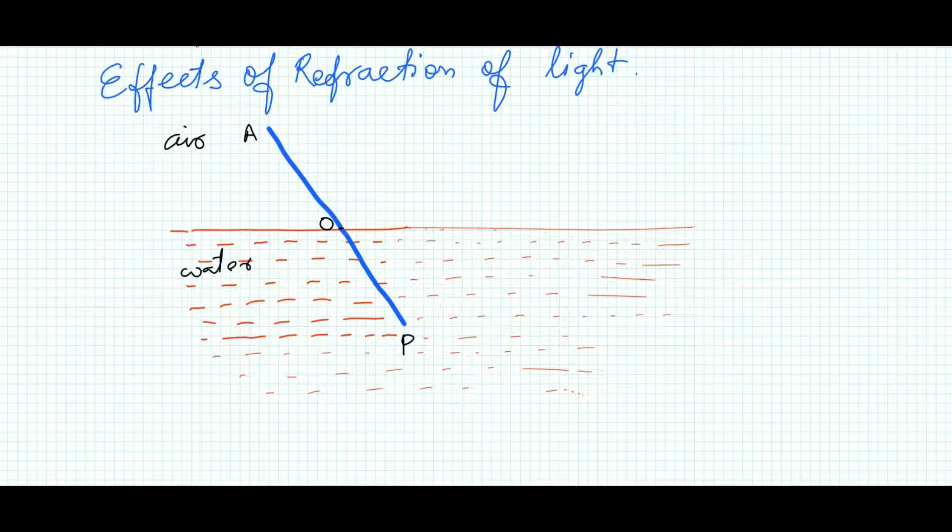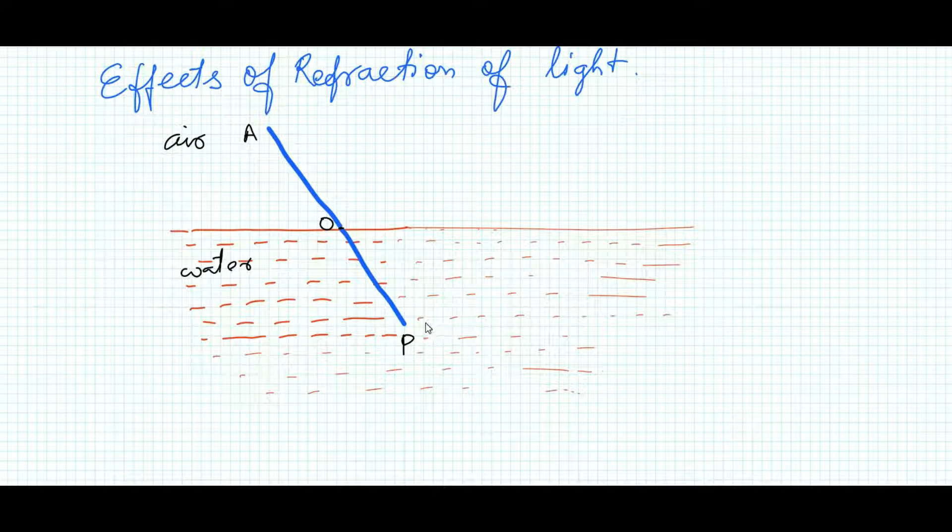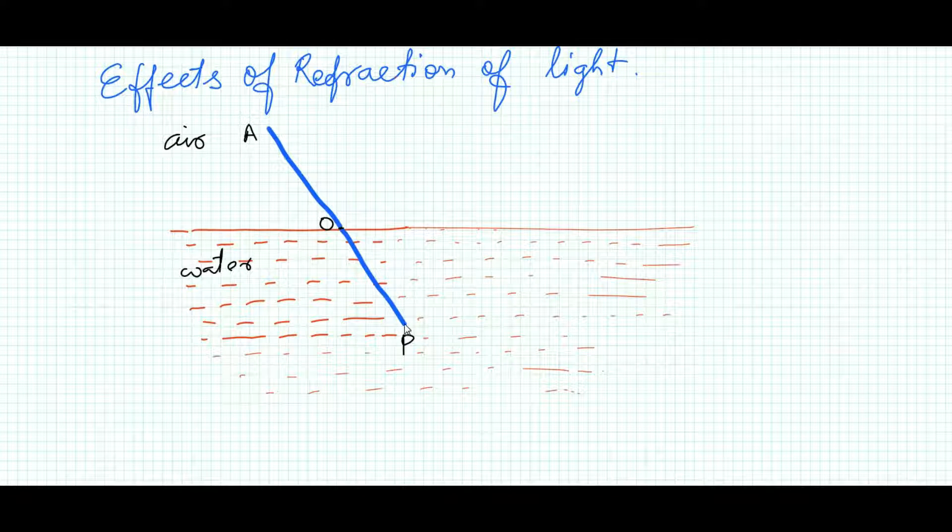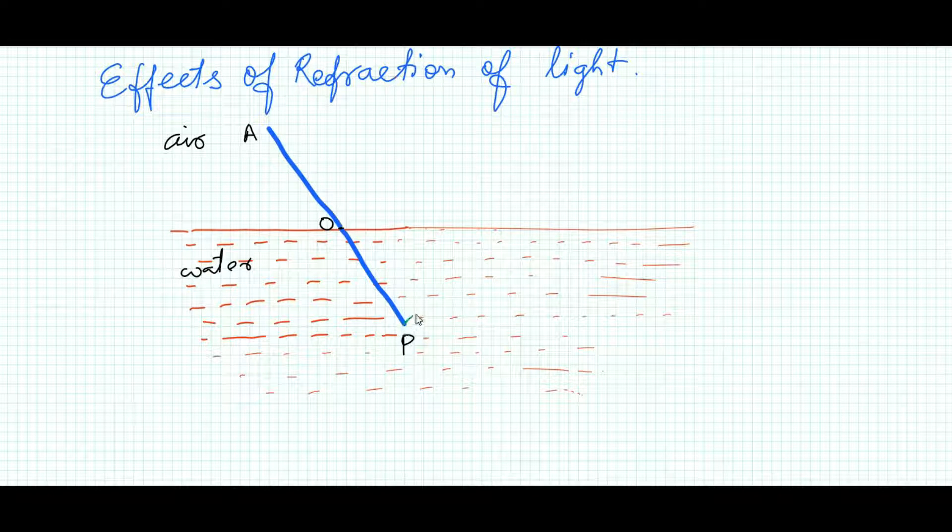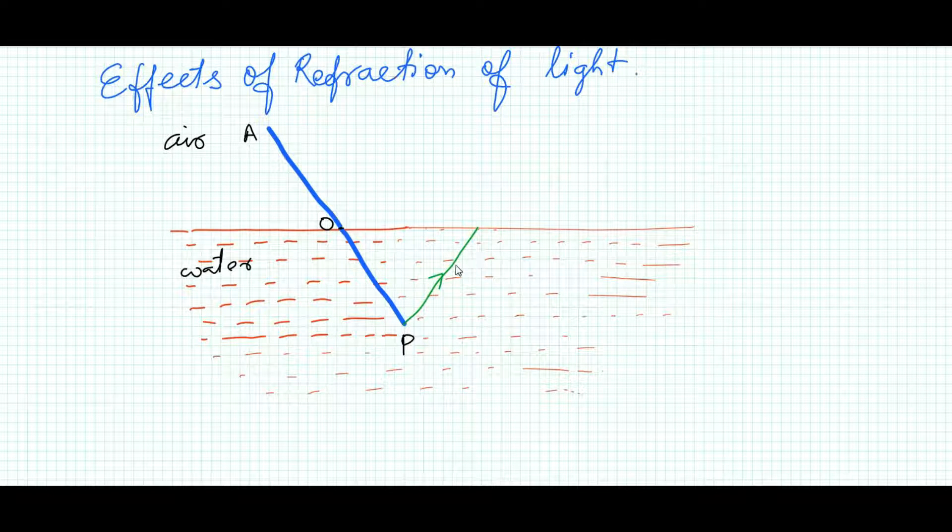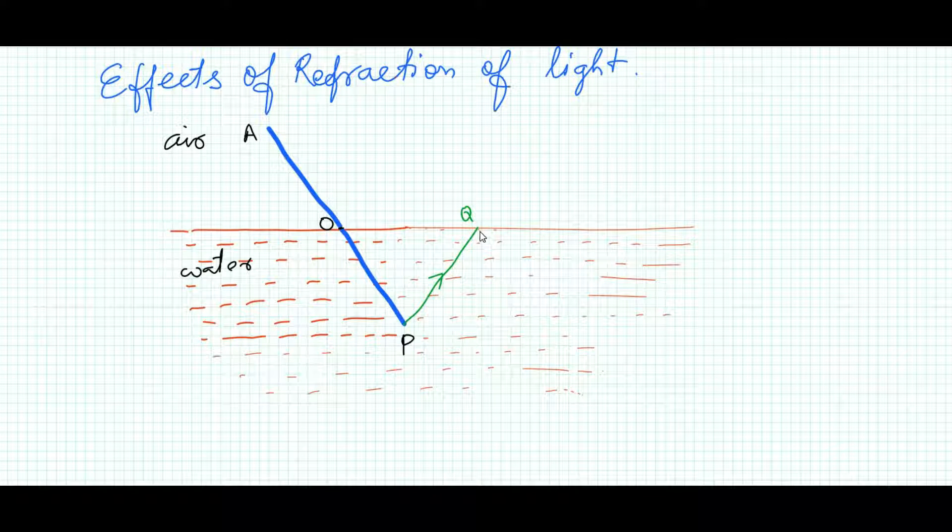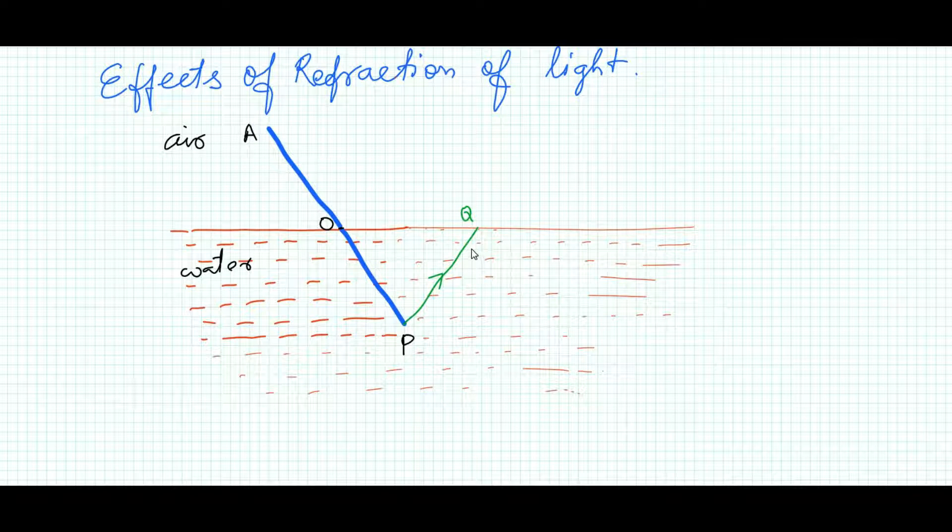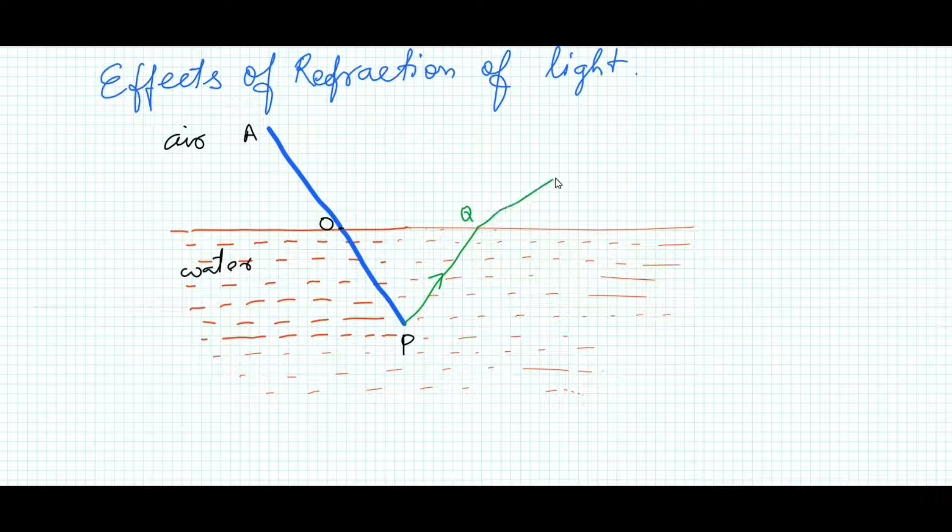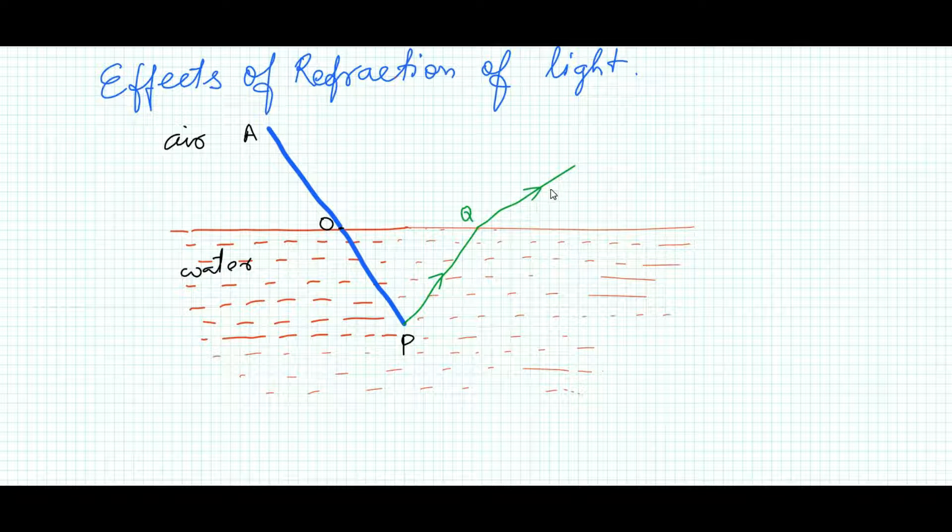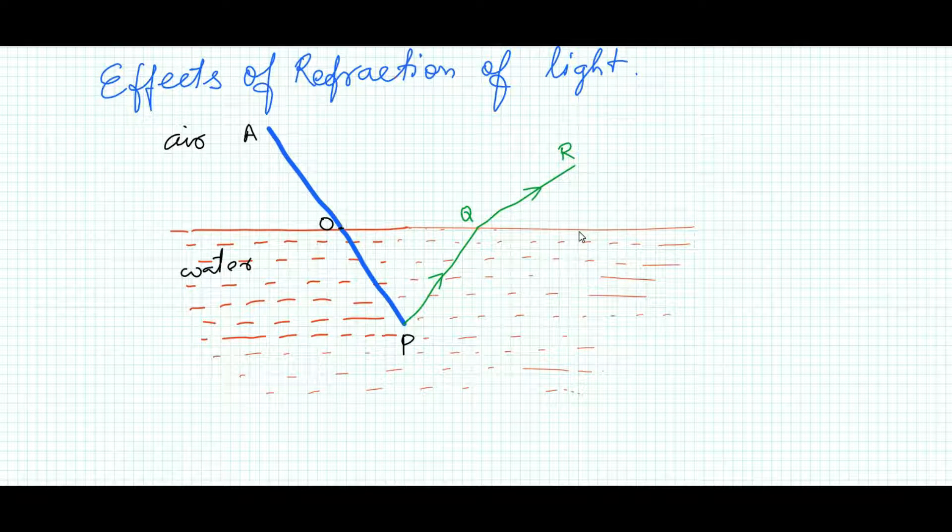So we will study the refraction of the light. To explain this event, we take two rays of light coming from the point P. It travels from point P, suppose PQ, and when it comes from the water to air—that means it is running from a denser medium to a rarer medium—it refracts away from the normal like this. Suppose this is QS.